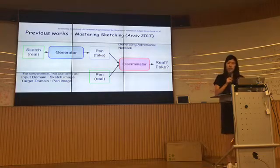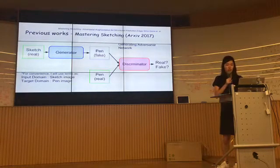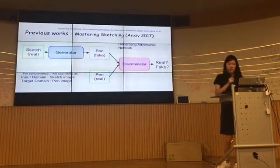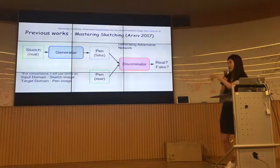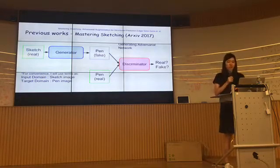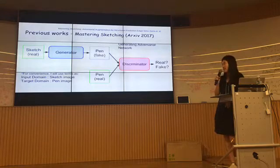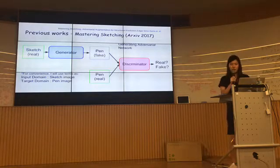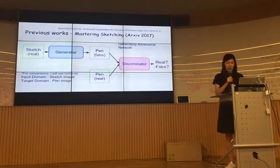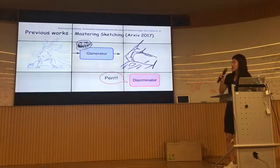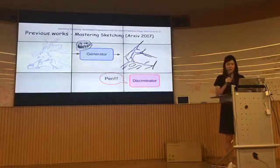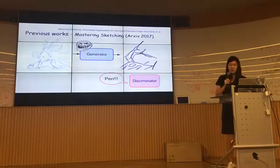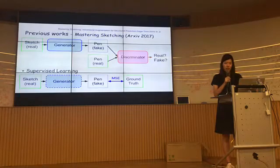They first tried to utilize unpaired sketch and target images. From now on, I'll use the term 'sketch image' for the input domain and 'pen image' for the target domain. They first tried fully unsupervised learning — training a generator using sketch and pen datasets — and got a weird result. The generator drew random lines but the discriminator thought it looked like pen drawing. So fully unsupervised learning failed and they added supervised learning.